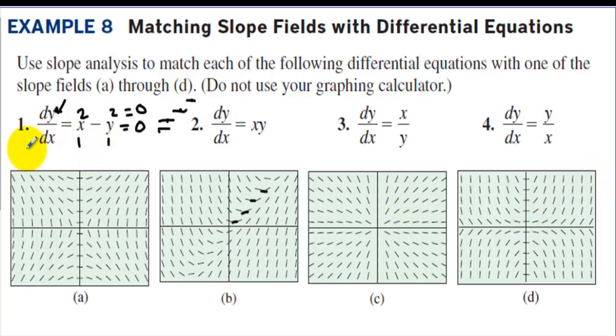Now for 2, when x is 0, when we have 0 times 1, 0 times 2, 0 times 3, all of the slopes will be 0. Well x is 0 on the y-axis, so I'm looking for a y-axis with slopes of 0. And when y is 0 we'll have slopes of 0 also. Does this look like it's leveling out? That could be a possibility. And it looks like this could be a possibility. But it doesn't look like I have slopes of 0 on the y-axis here. So this one has to be letter D.